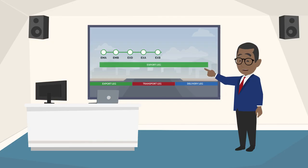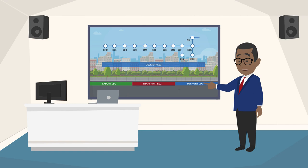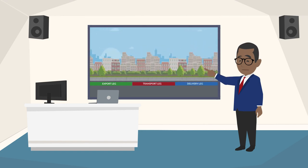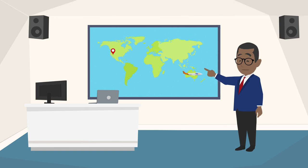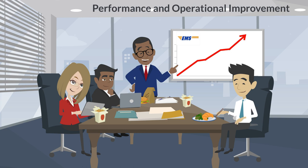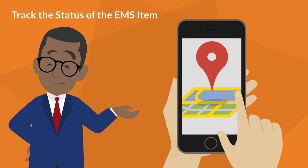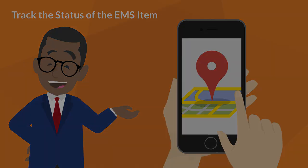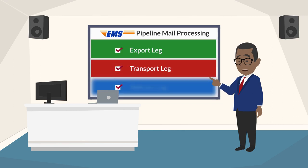We're now at the end of the EMS pipeline and you have an overview of the most used events. All the events, if scanned correctly, will reflect electronically the entire journey of the EMS item and mirror the physical movement of the EMS item. Using the correct event scans will help posts measure performance and find room for operational improvements, improve reliability, and enable your customers to know the status of the EMS item in the tracking system. EMS pipeline mail processing is important, and we hope that you will use this resource to familiarize yourself with the scans needed for the export, transport, and delivery legs.